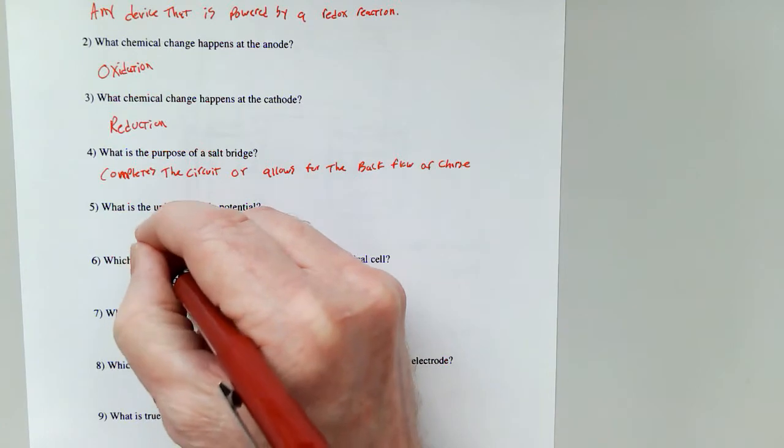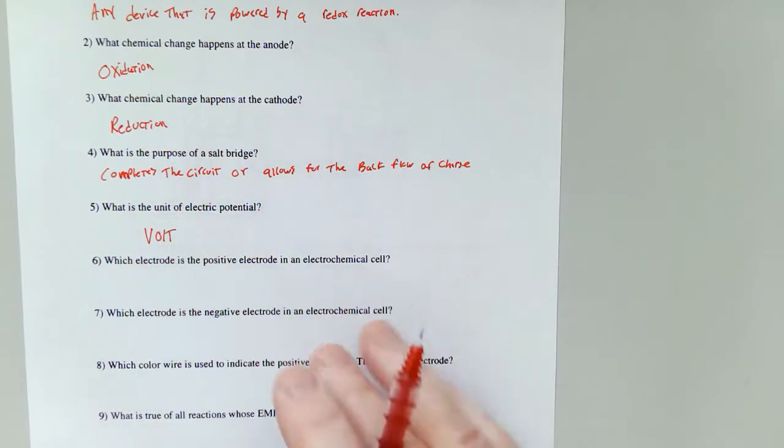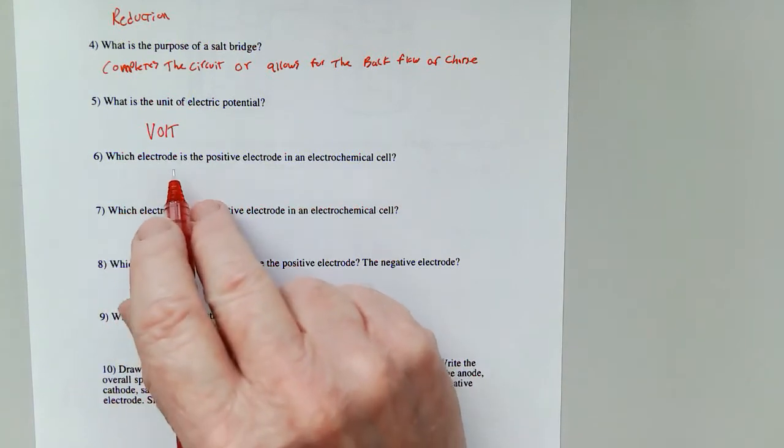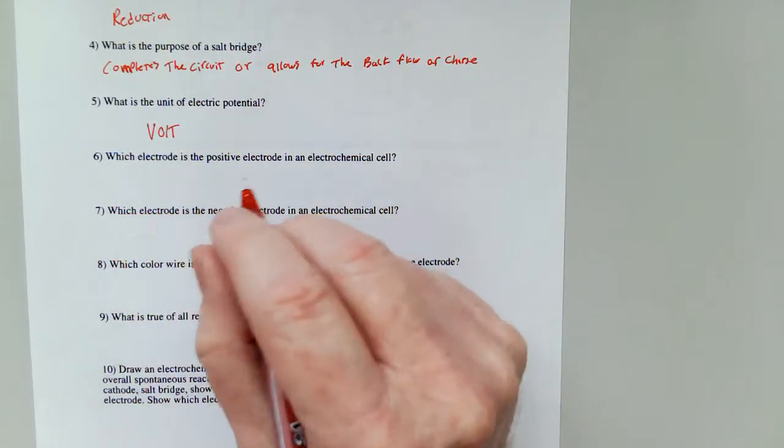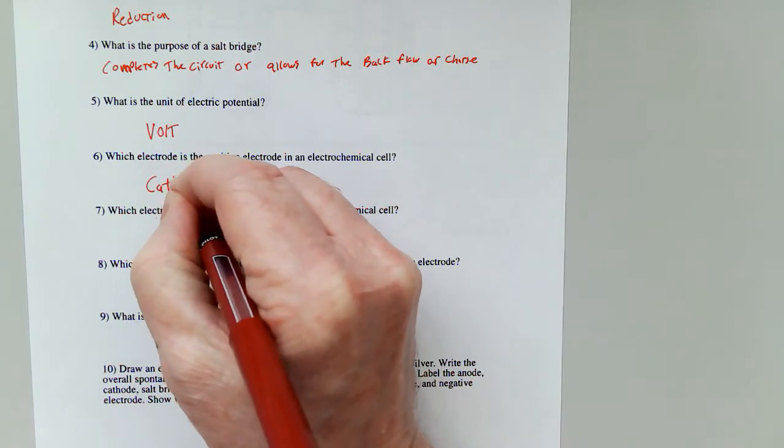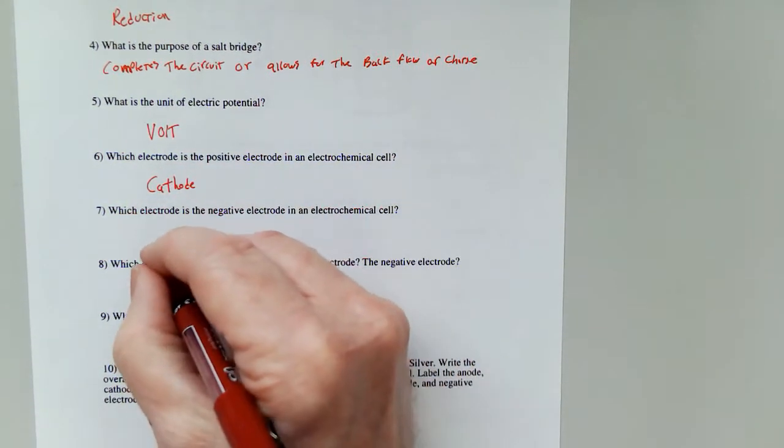The unit of electric potential for calculating all of this is going to be the volt. And the positive electrode in an electrochemical cell is the cathode. And the negative electrode is the anode.